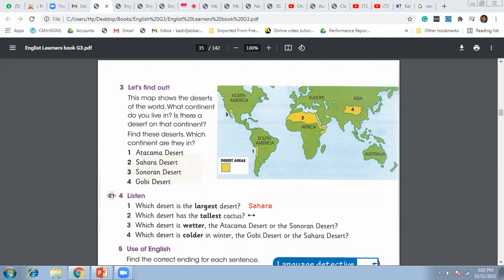Sahara, here it is Sonoran, and the down two questions: wetter is Sonoran Desert and colder is the Gobi Desert. This is how you can solve this question, the answer number four in your book. All right, so this is it for today.